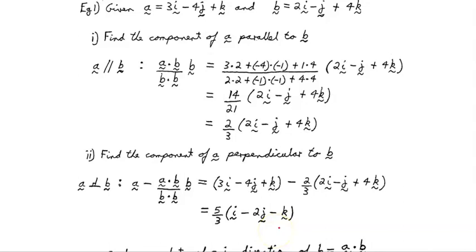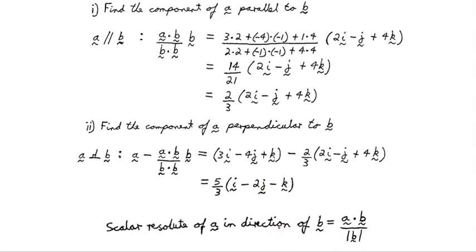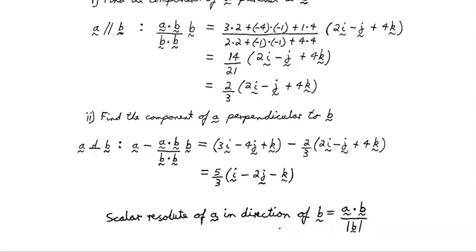One more thing: I've been talking in terms of vectors, but what if you just want the scalar part? The scalar resolute of A in the direction of B is simply A dot B divided by the modulus of B. That's all it is — A dot B over |B|. And that's it for vector resolutes.